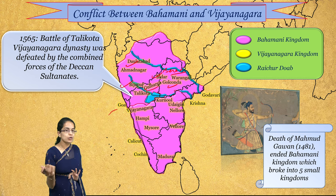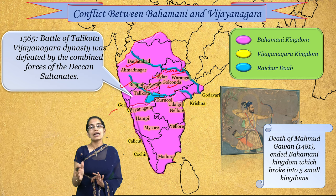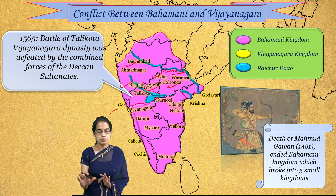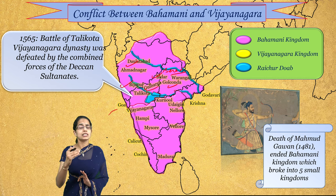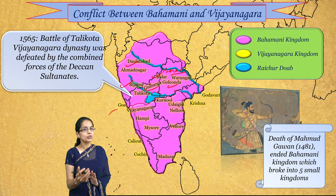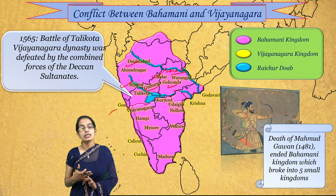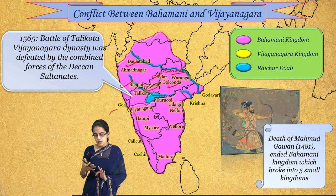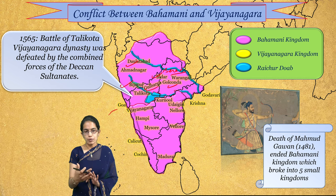Similarly, in the north, the Bahamani kingdom had collapsed much earlier following the death of Mahmud Gavan in 1481. The Vijayanagar empire, however, lost its existence due to the combined attack of the Deccan sultans. The five major sultanates and their ruling dynasties were: Bidar under Baridshahi, Berar under Imadshahi, Bijapur under Adilshahi, Ahmadnagar under Nizamshahi, and Golconda under Qutubshahi.